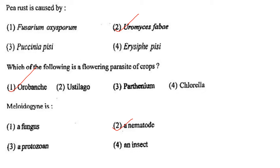Next one: Which of the following is a flowering parasite of crops? Option 1, Orobanche; option 2, Ustilago; option 3, Parthenium; option 4, Chlorella. Answer is option 1: Orobanche.